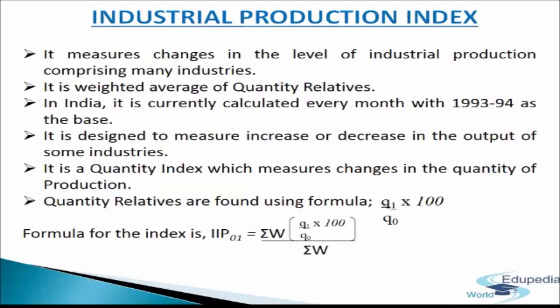Industrial production index measures the overall change in the total volume of industrial production. It measures the quantity of production in the areas of manufacturing, mining, and utilities.